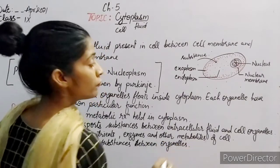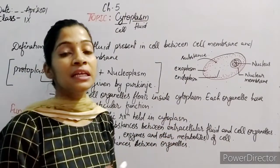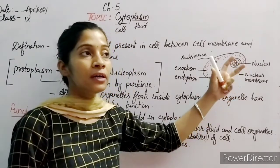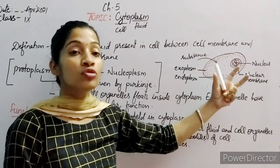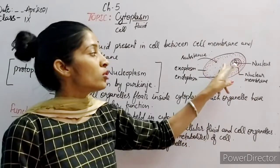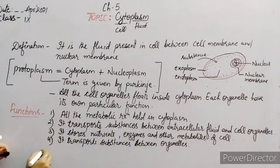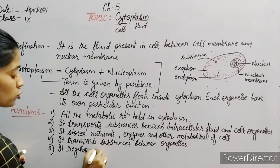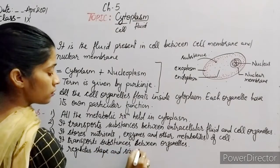And as cytoplasm is a fluid, it also helps regulate the shape and size of the cell. If the fluid dries up or shrinks, the cell size will also shrink. So it regulates the shape and size of the cell.